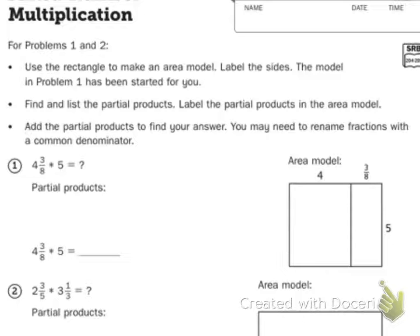For problems 1 and 2, use the rectangle to make an area model. Label the sides. The model in problem 1 has been started for you. That's the one we're going to work together.